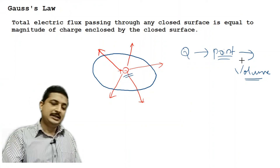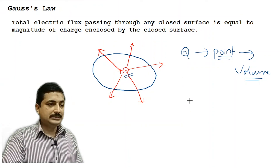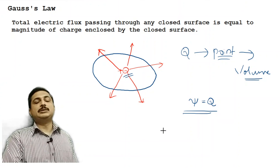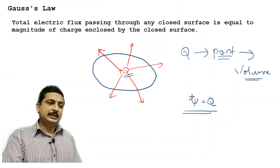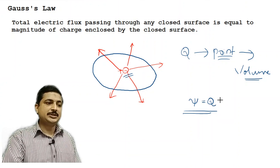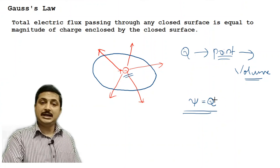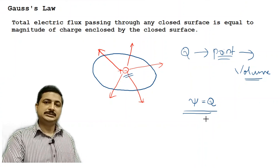Mathematically, we represent this as ψ equals Q — psi is equal to Q. What is psi? Electric flux. What is Q? Total charge. So the total flux psi is equal to total charge Q. This is Gauss's law.